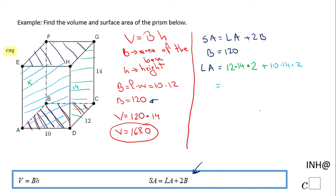So here we're going to get 12 times 14 times 2, that is 336, plus 10 times 14 times 2, that will be 280. So if we add these two values, we end up with 616.